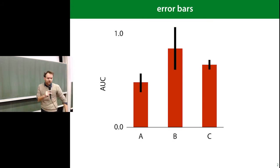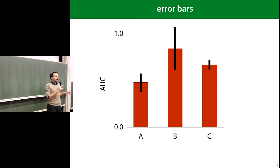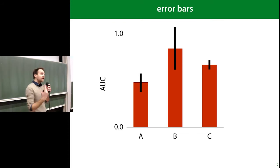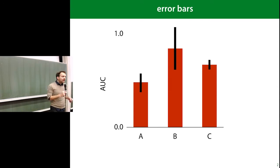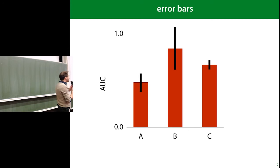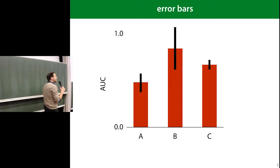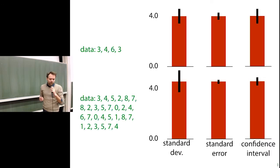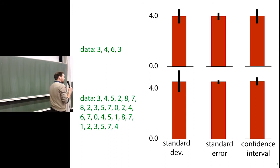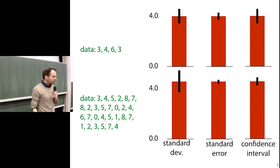This is where we left it on Monday. I talked about error bars and statistics for machine learning experiments. I made the distinction that you can do statistics for two reasons: you can do statistics to show confidence — you have a measurement of your accuracy and you can show how confident that measurement is, how close to the truth it is — or you can show spread.